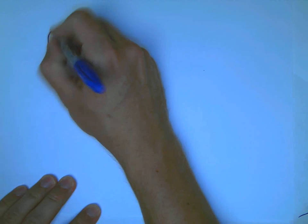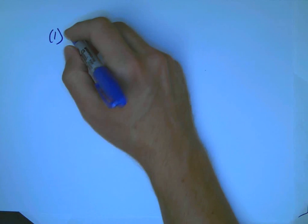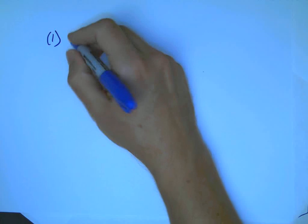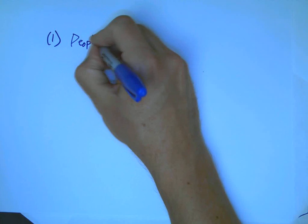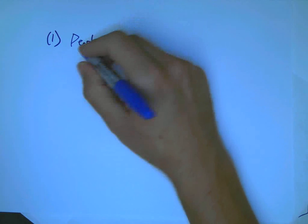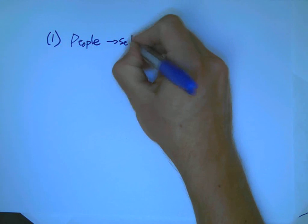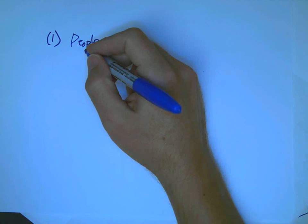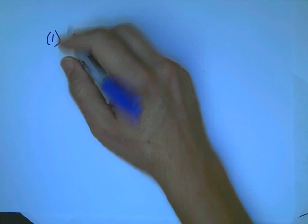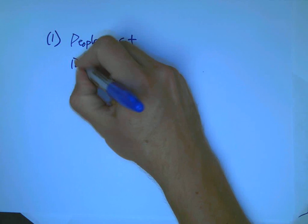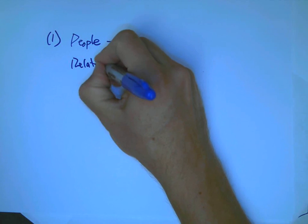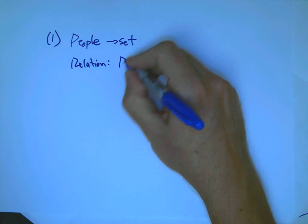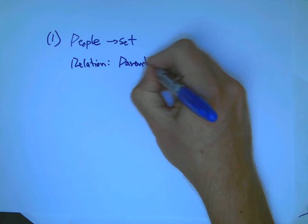It's really a very general thing, what relations and functions are. And so the first example is the set of things that I'm going to look at is just people, not numbers. And so that's the set we're going to think about. All people, let's say just all living people right now. And the relation is the parent-child relation.